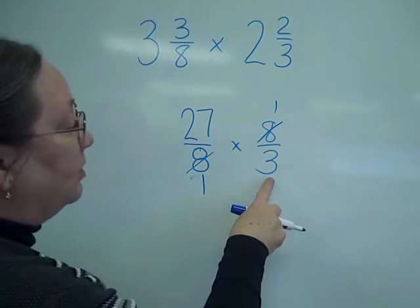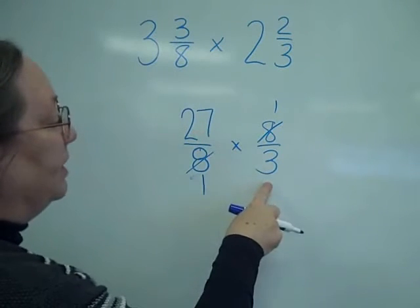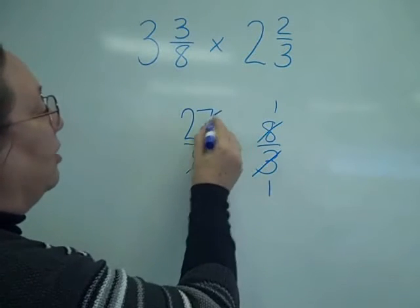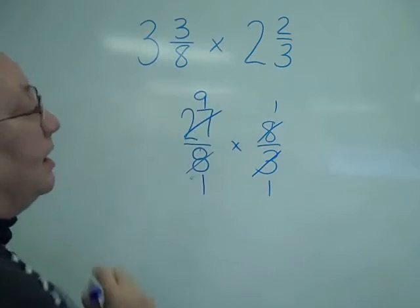Now, this is a nice one because I also have the 3 and the 27. I'm going to divide by 3. 3 goes into 3 once. 3 goes into 27, 9 times.